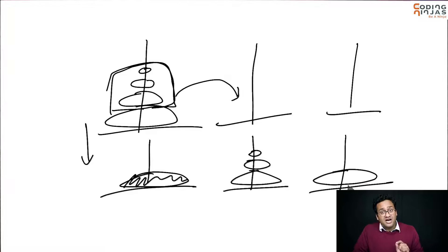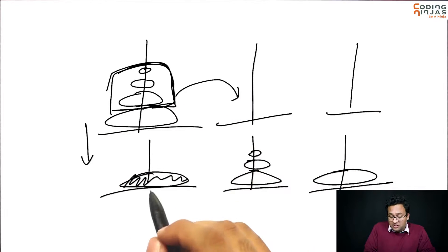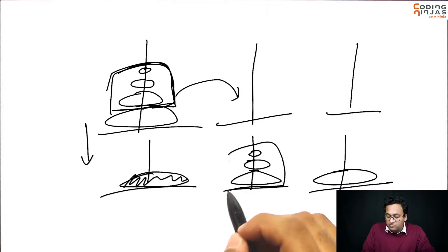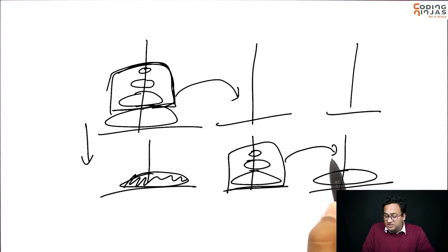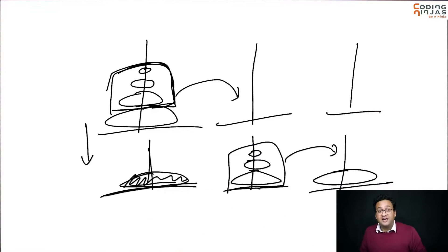Now, the good part about the largest disk is it is as good as the ground because it does not restrict us from anything. You can just put anything on top of this. This is as good as ground. So, first you move n minus 1 to helper. Then you move the largest disk to the destination.